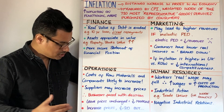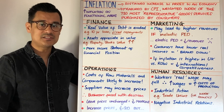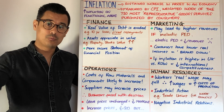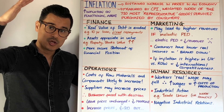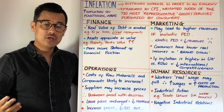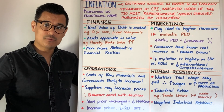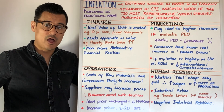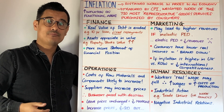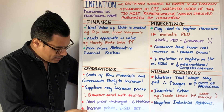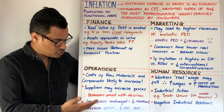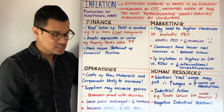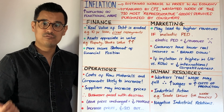If your suppliers increase their prices, you have a decision to make. Do you leave your prices unchanged? If you do, your profit margins will reduce. Or you decide as a business to pass the inflationary pressures from the supplier on to your consumers and increase your prices. But if you increase your prices, according to the law of demand, the quantity demanded for your products will fall.